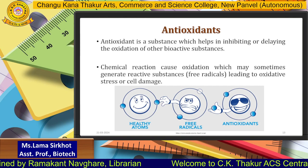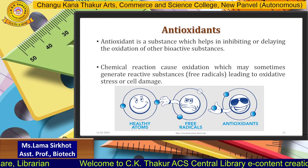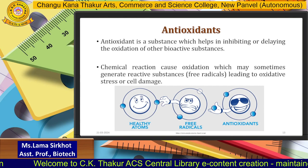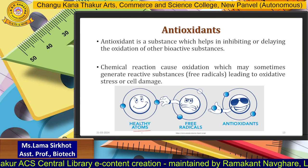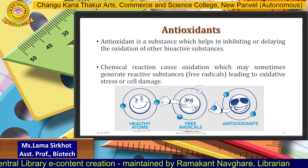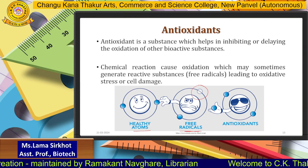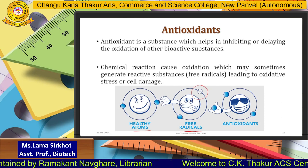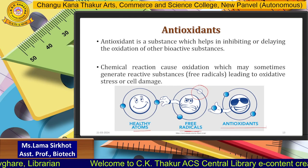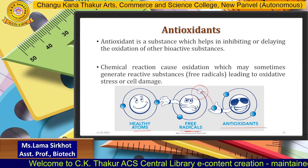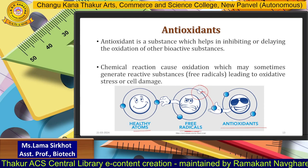Antioxidants are consumed so that free radicals do not destroy your cells. Chemical reactions cause oxidation which may generate reactive free radicals, leading to oxidative stress or cell damage. In the diagram you can see a healthy atom and a free radical — the free radical has a missing electron and will try to take one from a healthy atom, creating oxidative stress or cell damage. The antioxidant, shown as a star, donates one electron to the free radical, calming it down so it stops its rampaging activity.